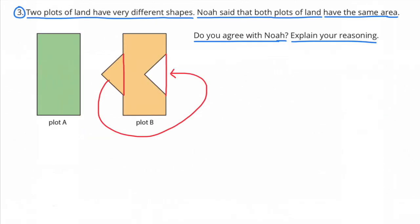Number 3. Two plots of land have very different shapes. Noah said that both plots of land have the same area. Do you agree with Noah? Explain your reasoning.